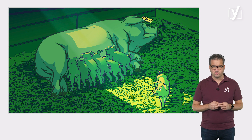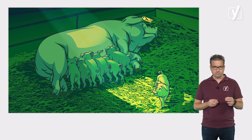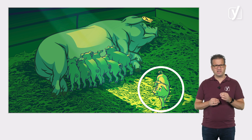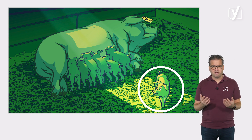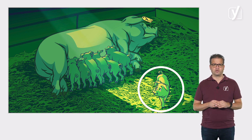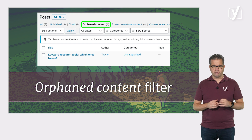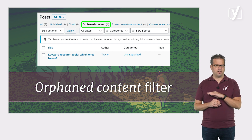While we're talking about internal links, let's talk about orphaned content too. Orphaned content is content that doesn't get any links from other posts or pages on the same website. As a result, search engines and visitors can't find it. In the past, it used to be hard to track down orphaned content, but now with the orphaned content filter in Yoast SEO Premium, it's a piece of cake. Coupled with the internal linking tool, you'll start linking these posts in no time.